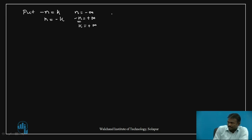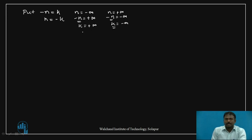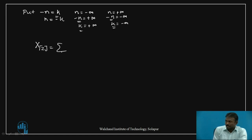When N equals minus infinity, minus N equals plus infinity, so K equals plus infinity. Similarly, when N equals plus infinity, minus N equals minus infinity, so K equals minus infinity. With minus N replaced by K, we get X of Z equal to summation K equal to infinity to minus infinity, X of K Z to the power K.